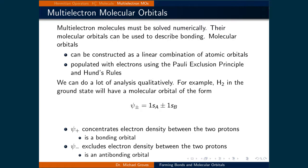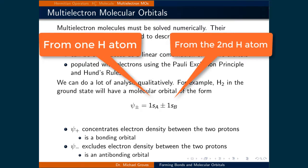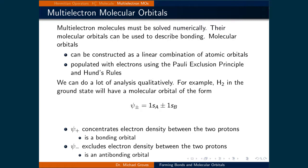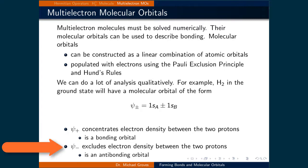With molecular orbital diagrams, we can do a lot of analysis qualitatively. Let's continue our discussion of molecular orbitals by looking at H2. In the ground state, H2 will have two molecular orbitals, being psi plus minus equal to the 1s orbital centered on the A nuclei, plus or minus the 1s orbital centered on the B nuclei. The two orbitals are denoted as psi plus and psi minus. Psi plus concentrates the electron density between the protons, due to constructive interference of the two wave functions representing the electrons in the 1s orbitals. Psi minus excludes electron density between the two protons due to destructive interference, and because the electron density is excluded between the protons, it is referred to as an antibonding orbital.